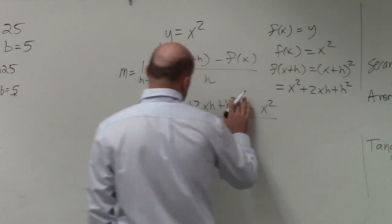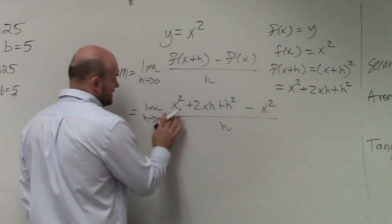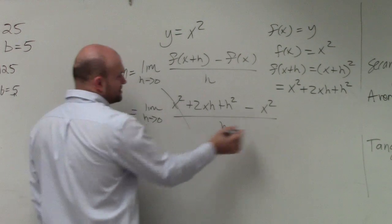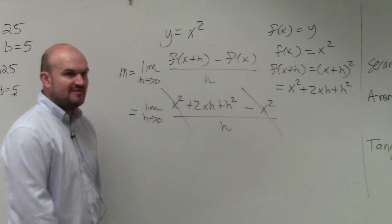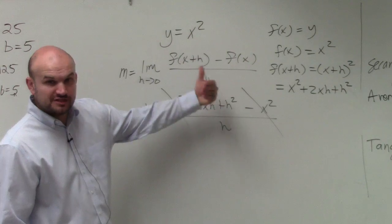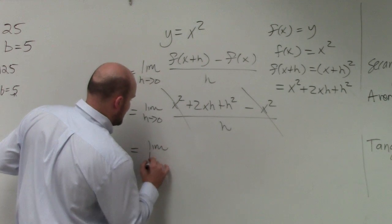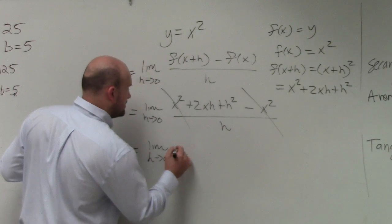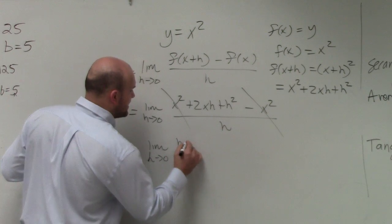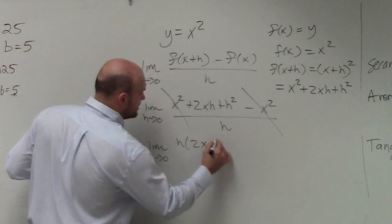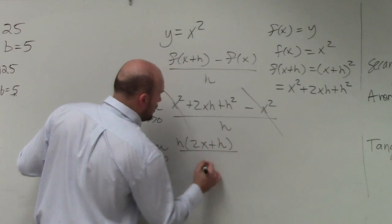Fortunately, if I remove these parentheses, you can see that my x squareds divide out, and I have an h that I can factor out. Therefore, I'm left with the limit as h approaches 0 of, factoring out an h, 2x plus h all over h.